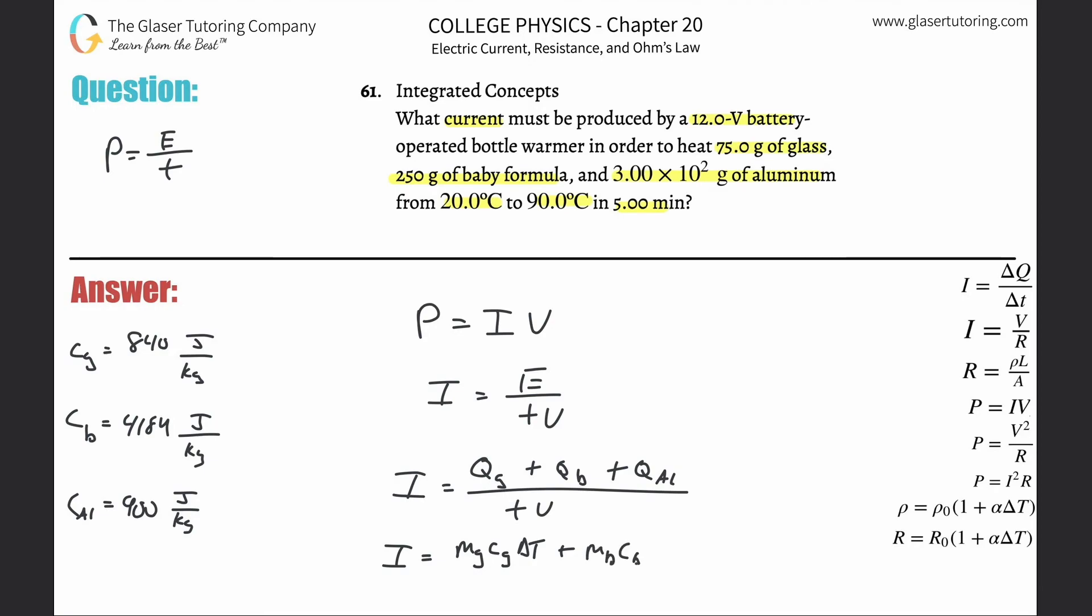Plus the mass of the baby formula times the specific heat of the baby formula times the change in temperature of the baby formula. Plus the mass of the aluminum times the specific heat of the aluminum times the change in temperature of the aluminum, all divided by the time multiplied by the voltage.